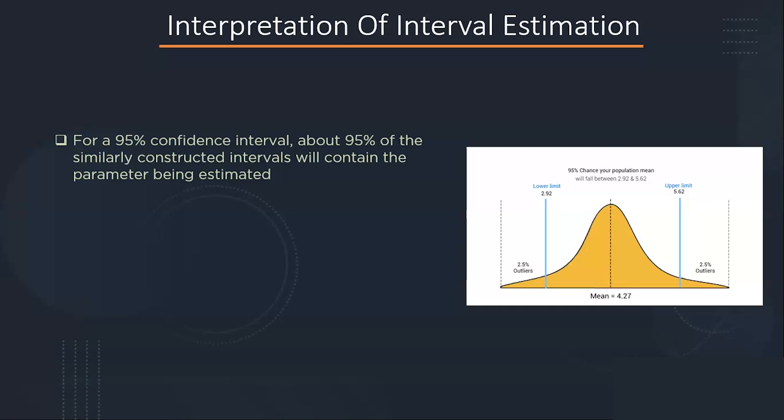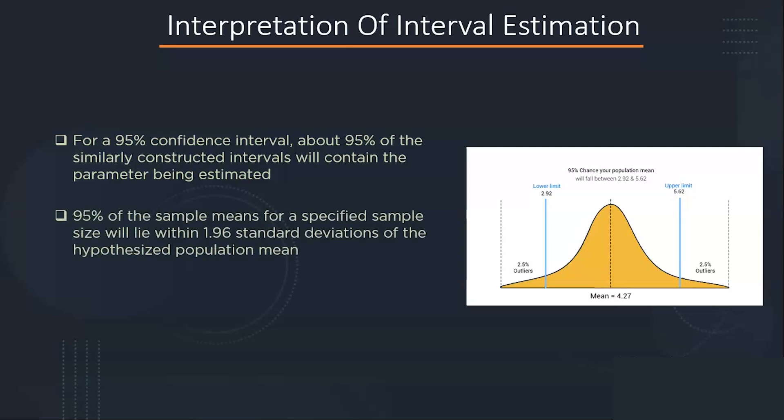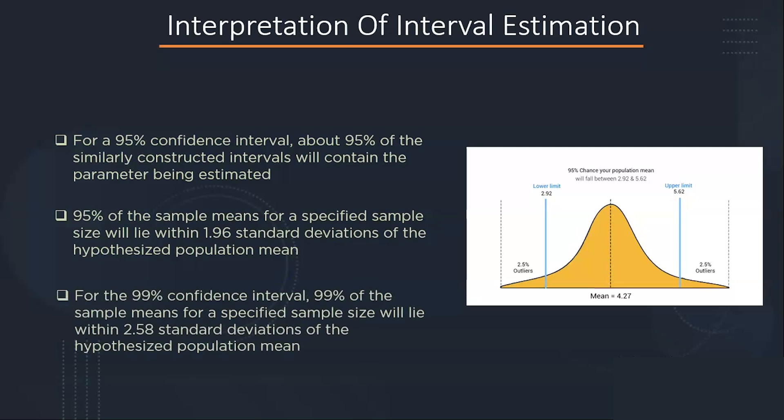If multiple samples are drawn from the same population and a 95% CI calculated for each sample, we would expect the population mean to be found within 95% of these confidence intervals. 95% of the sample means for a specified sample size will lie within 1.96 standard deviations of the hypothesized population mean. Similarly, for 99% confidence interval, 99% of the sample means will lie within 2.5 standard deviations from the population mean.